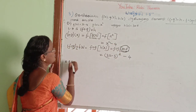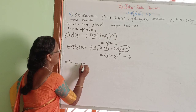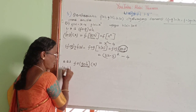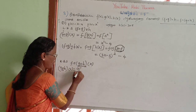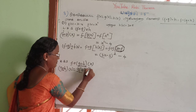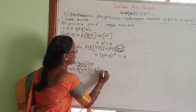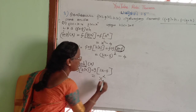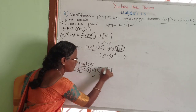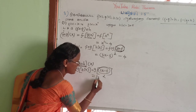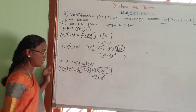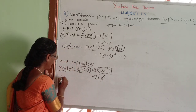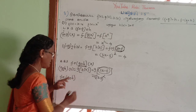The second step is the right side: F of G of H of X. Now we have a bracket here. G of H of X. Now we replace. G of H of X — H of X is 3X minus 8. G of X is X squared, so we have bracket: 3X minus 8 whole square. This is F of G of H of X.